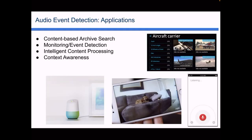There's actually an application Google has released: automatically transcribing sound events for deaf and hard of hearing people as an accessibility app. So if it hears the phone ring or a knock at the door, it'll automatically alert you on screen.